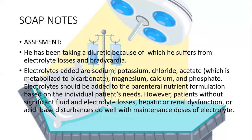Electrolytes to be added include sodium, potassium, chloride, acetate (metabolized to bicarbonate), magnesium, calcium, and phosphate. Electrolytes should be added to the parenteral nutrient formulation based on the individual patient's needs. Patients without significant fluid and electrolyte loss, hepatic or renal dysfunction, or acid-base disturbance generally do well with maintenance doses of electrolytes.